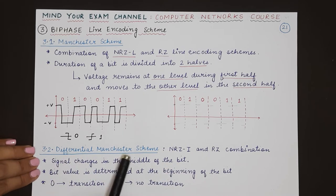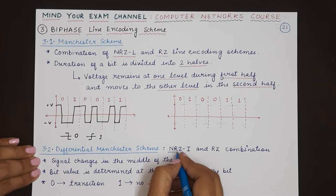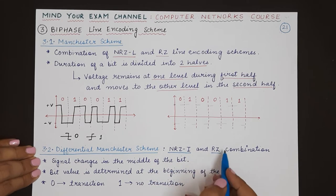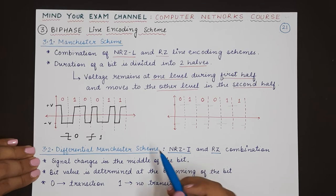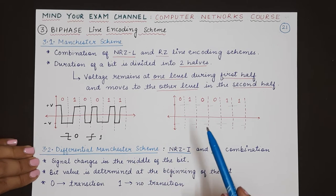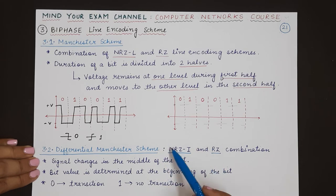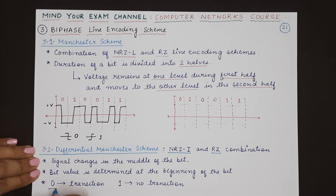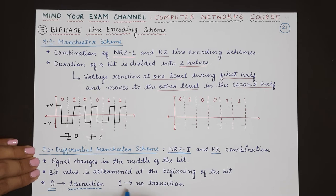In differential Manchester, this scheme is a combination of NRZ invert (NRZI) and RZ. RZ brings a change in signal level during the bit duration, and NRZI means that if the next bit is zero we will make a transition, while if the next bit is one we will not make a transition.